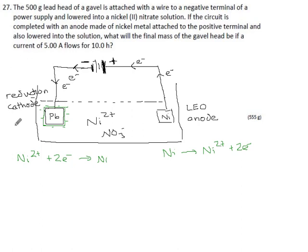So that's the chemistry that's going on. Now let's see what numbers they've actually given us. They said the circuit's completed with an anode made of nickel metal, attached to the positive terminal, lowered into the solution. What will the final mass of the gavel head be if a current of 5 amps flows for 10 hours? Nickel is plating onto this, so it's going to get heavier. It's going to start at 500 grams and be more than that after because of all the nickel that's been added on. How much? Let's see if It = Fn can help us with this.